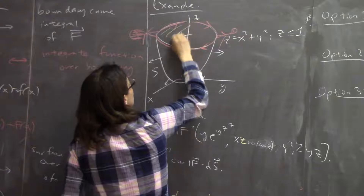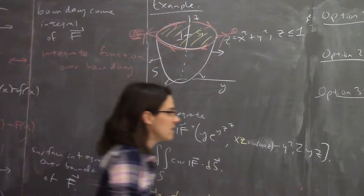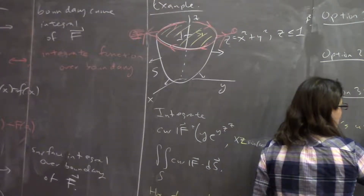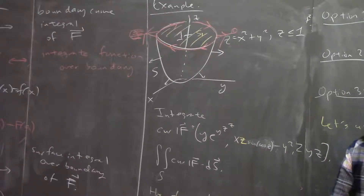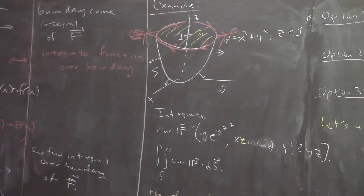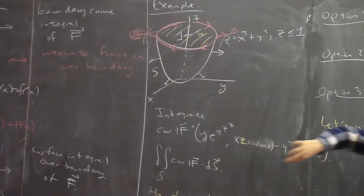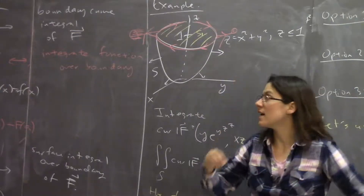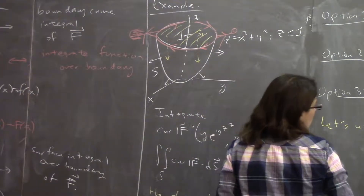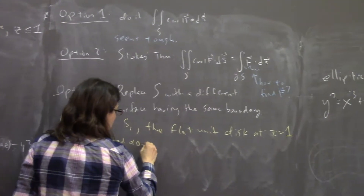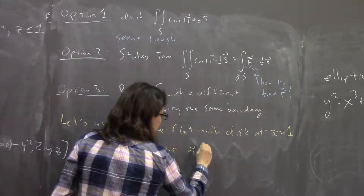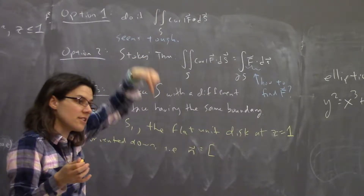Let's try the flat one. Let's use surface S1: the flat unit disk at height z = 1. But it needs an orientation. Should we orient it up or down? Down — because the things are pointing out, and as you contract this surface, they're pointing down. So this thing is oriented down, meaning its unit normal vector is just (0, 0, −1) everywhere.